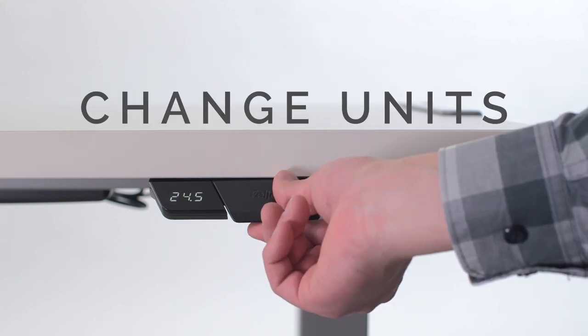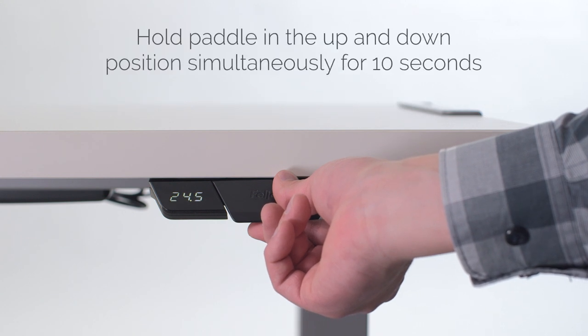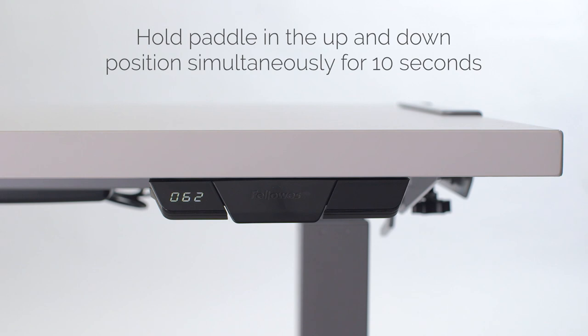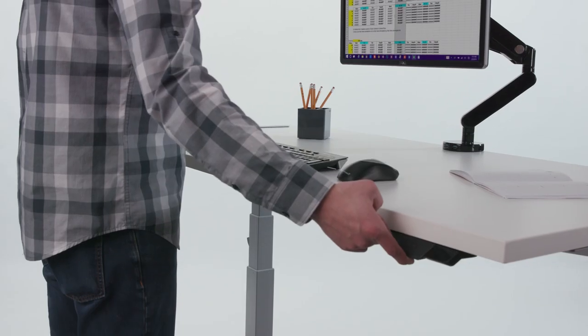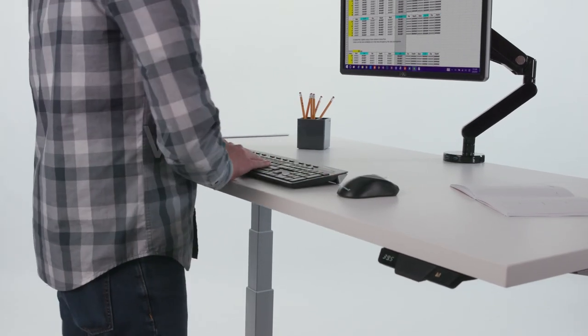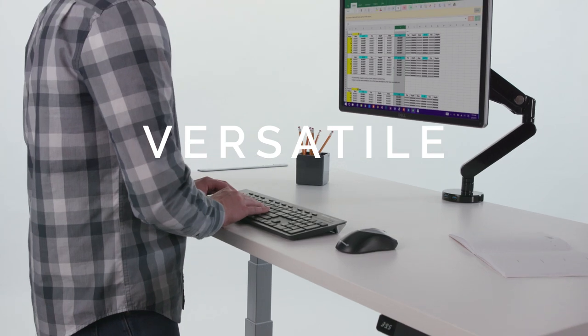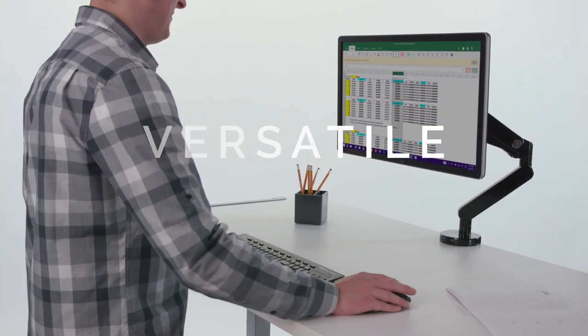To change the display units from inches to centimeters, hold the paddle in the up and down position simultaneously for around 10 seconds. Enjoy adding movement to your workday with the most versatile height adjustable desk. Lovato from Fellowes.